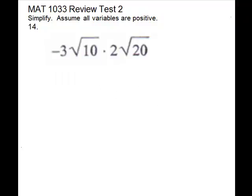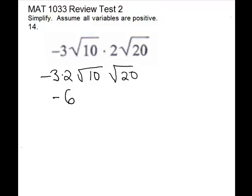For problem 14, if we look at this, everything is multiplied. The negative 3 is times this radical, which is times 2, which is times this radical. So everything is a multiplication. Rearrange it if you want. We have negative 3 times 2, and then we have these two radicals multiplied. The negative 3 times 2 will give you negative 6. For the radicals, we could multiply them and get 200, or we could break them down as we go. 10 is 2 times 5, and 20 can be 4 times 5, and the 4 will give you 2.